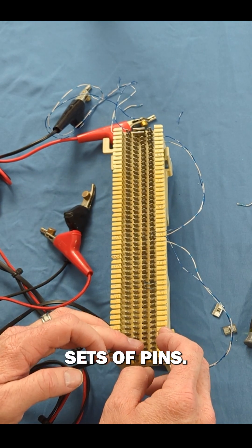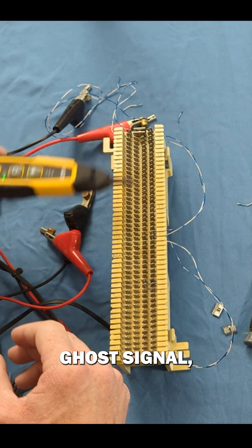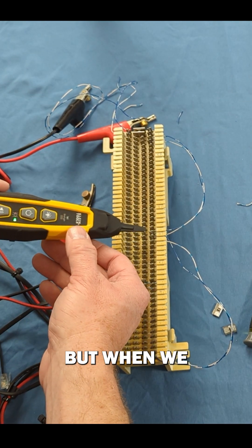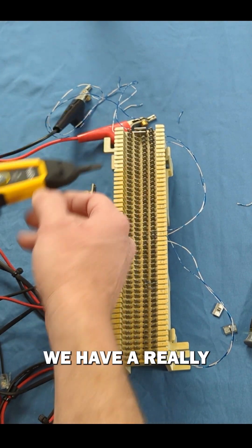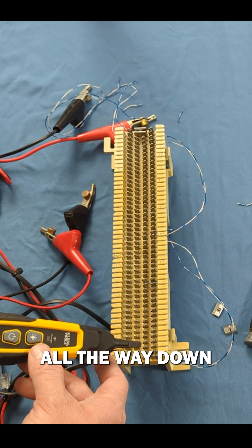So we obviously have our ghost signal, and when we touch there we have a really strong signal. When we touch this set we have a really strong signal, and it carries all the way down to the bottom of the block.